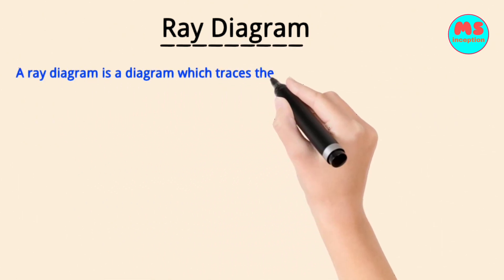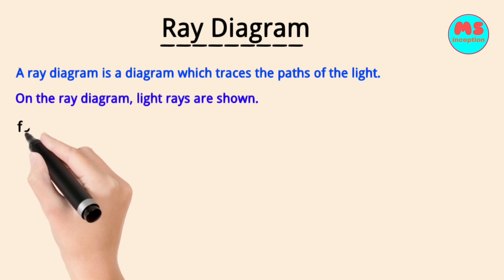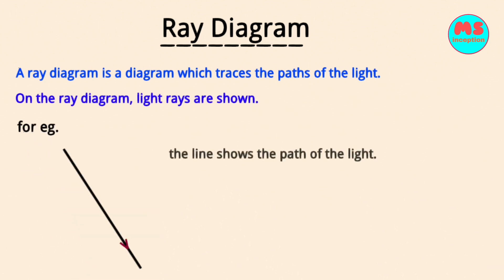A ray diagram is a diagram which traces the path of light. Light rays are shown on the diagram. A ray is shown in a figure where the line shows the path of the light and the arrow shows the direction of light.